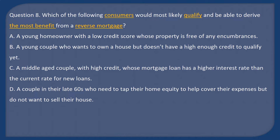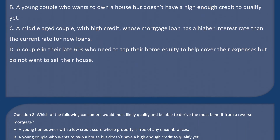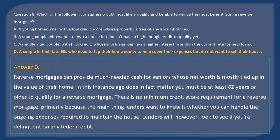Question 8: Which of the following consumers would most likely qualify and derive the most benefit from a reverse mortgage? A. A young homeowner with a low credit score whose property is free of any encumbrances. B. A young couple who wants to own a house but doesn't have high enough credit to qualify yet. C. A middle-aged couple with high credit whose mortgage has a higher interest rate than the current rate for new loans. D. A couple in their late 60s who need to tap their home equity to cover expenses but do not want to sell their house. Answer: D.